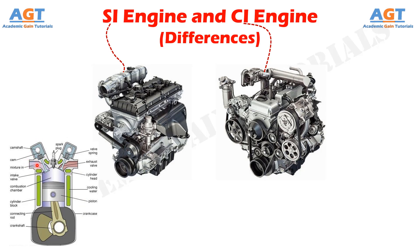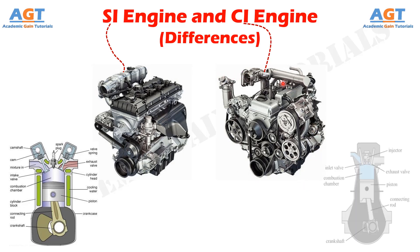In the spark ignition engine, the air-fuel mixture is inserted into the cylinder with the help of a carburetor. The compression of the fuel takes place but it has a low compression ratio. The fuel is ignited by the spark generated by the spark plug. SI engines produce less noise and vibration and their starting is very easy. They are light in weight and have less maintenance cost.